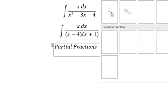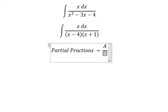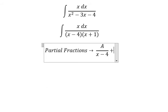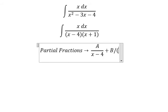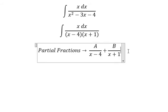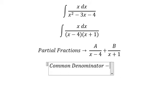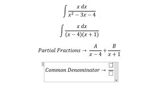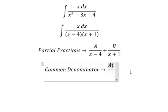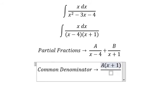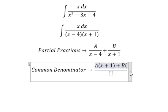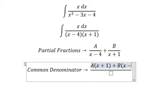We put capital A over x minus 4 plus capital B over x plus 1. So we do common denominator. We put A multiplied with x plus 1, and B multiplied with x minus 4.